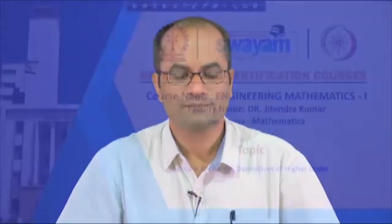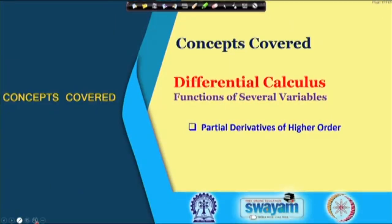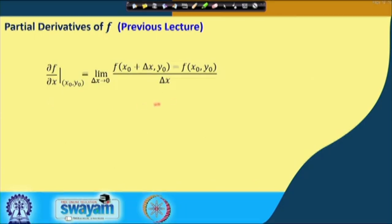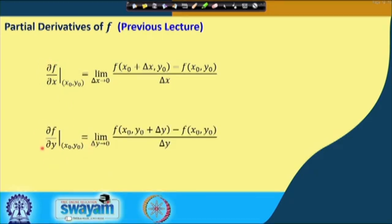Welcome to the lecture on Engineering Mathematics 1. This is lecture number 10, and we will be talking about partial derivatives of higher order. In the last lecture, we covered first-order partial derivatives — the fundamental definition of the partial derivative with respect to x at a point, taking the limit as the increment delta x goes to 0. Similarly, we had the first-order partial derivative with respect to y. Now we will continue this for higher-order derivatives.